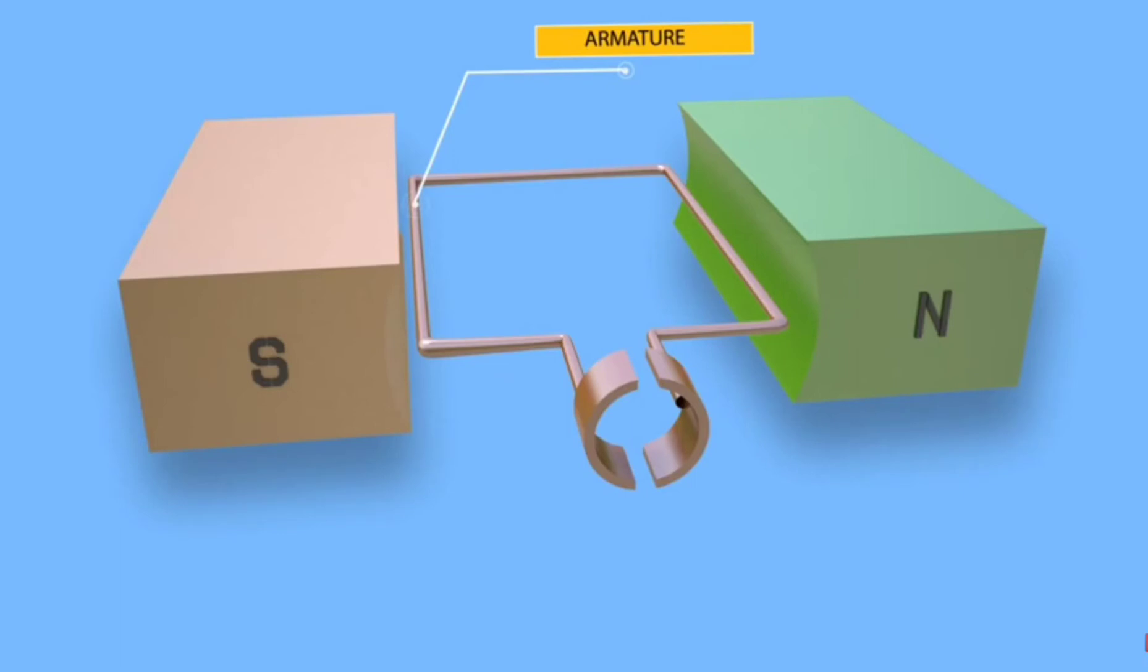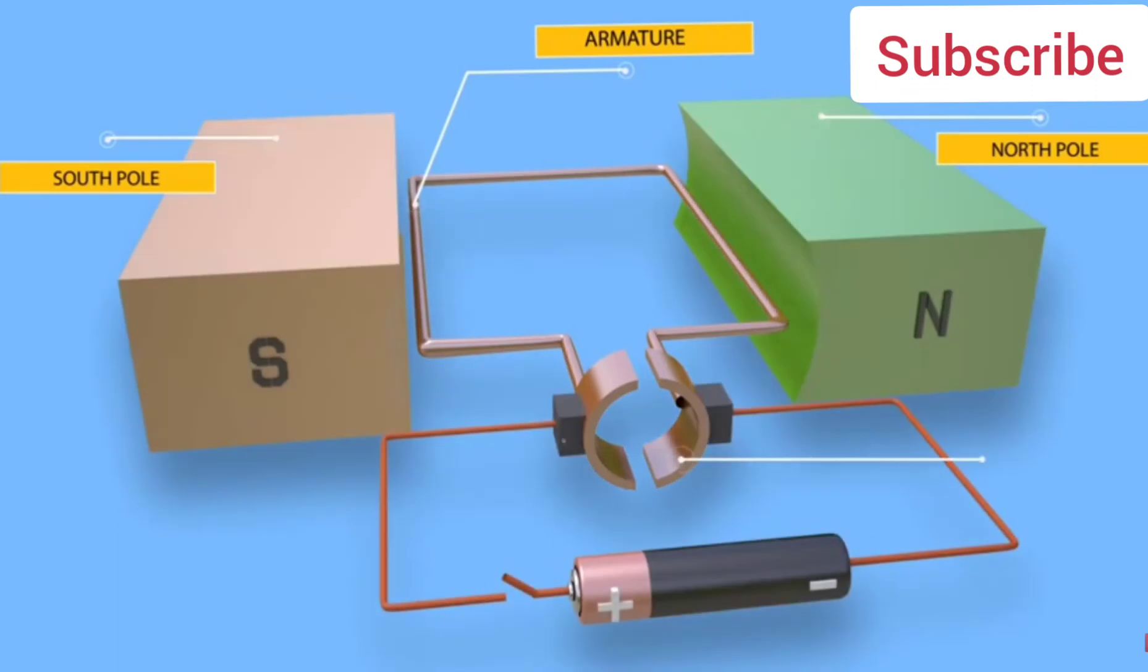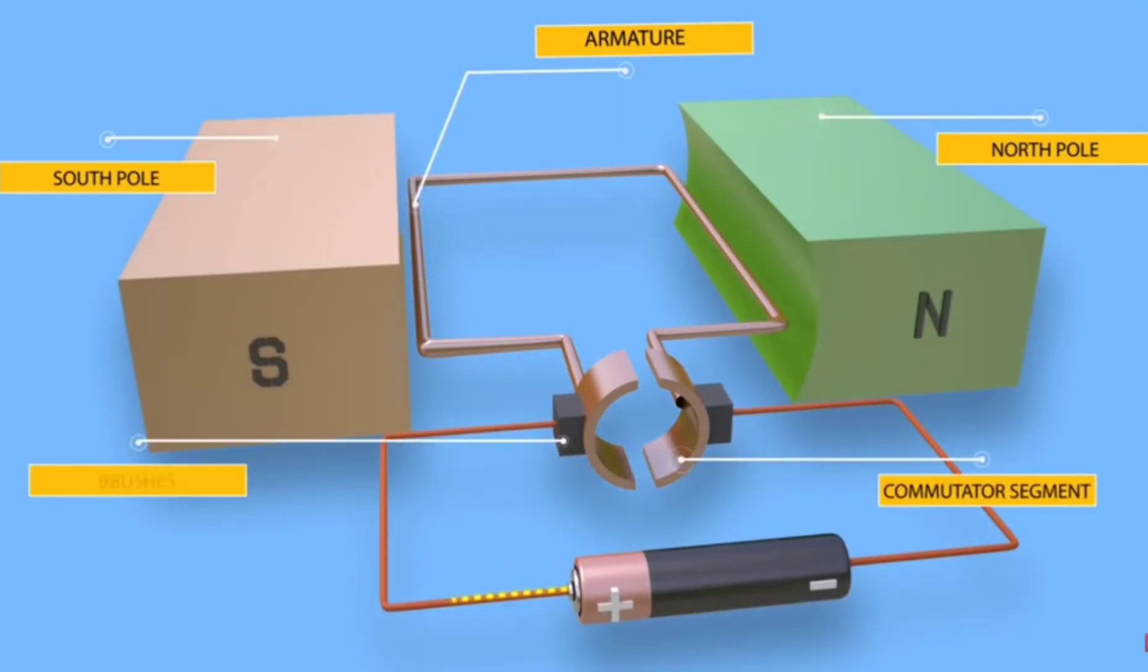The armature is placed between north and south poles of a permanent or electromagnet. In an elementary model, one single turn of conductor is placed between two opposite poles. If we start to supply DC via the commutator system, current will start to flow.